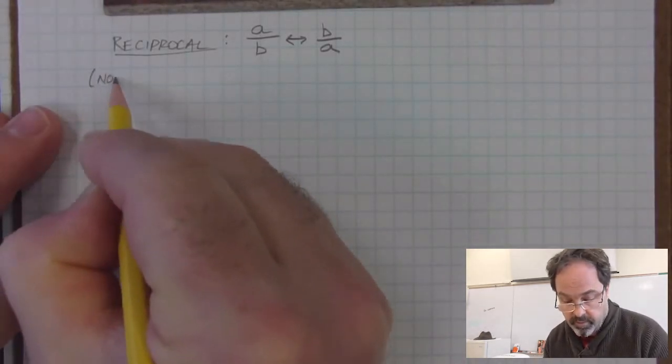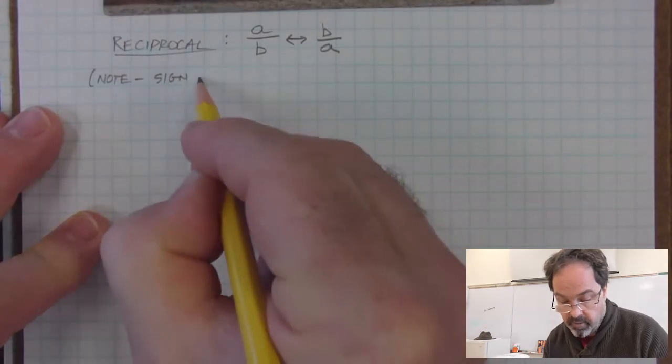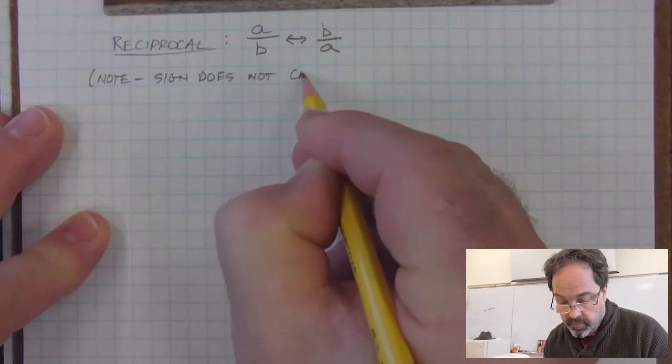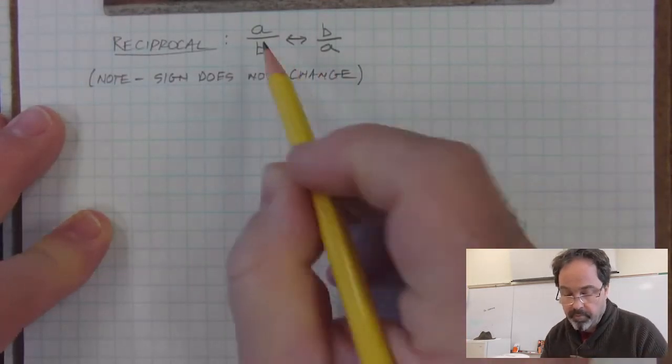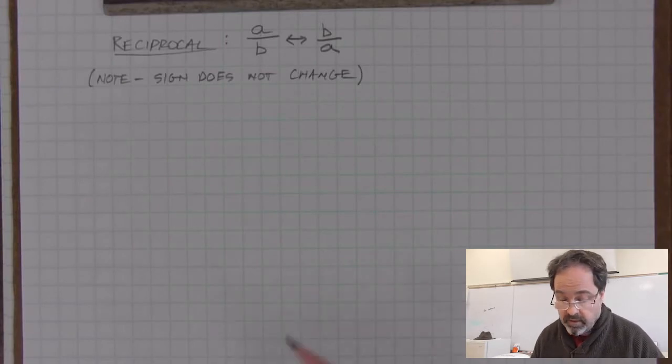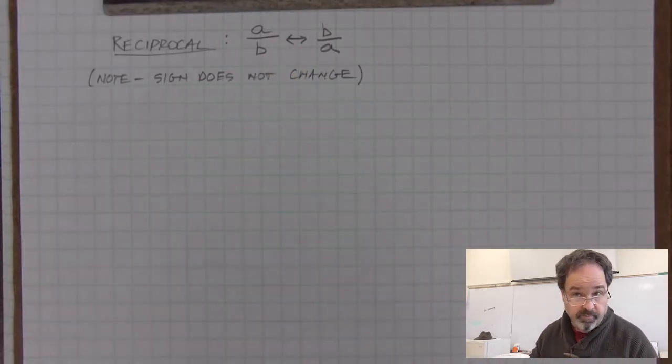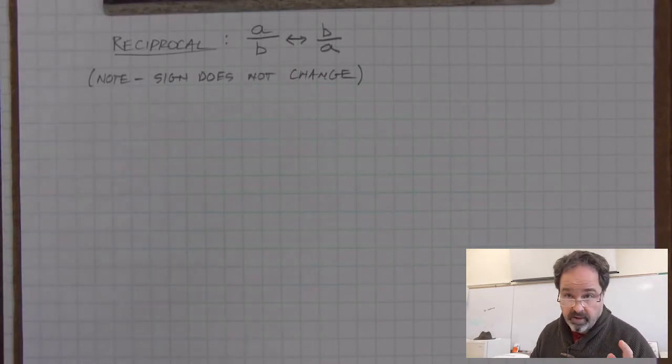So we'll make a note also that the sign does not change. If we start with a positive value, or a positive number, or a positive fraction, taking the reciprocal of it doesn't change the sign, it's still positive. Likewise, if a fraction a over b is negative, and we take the reciprocal of it, it remains negative. Taking a reciprocal doesn't alter the sign of the thing. That would be the opposite.